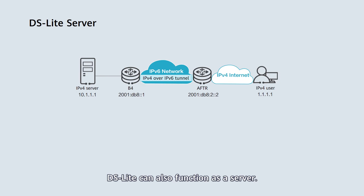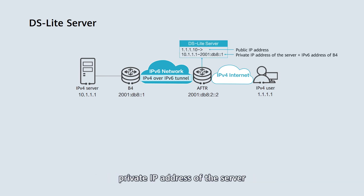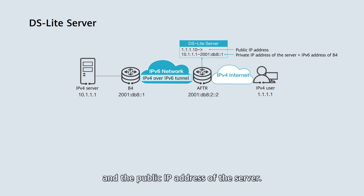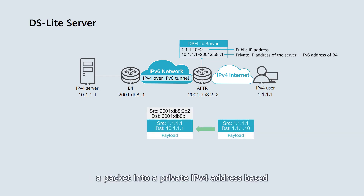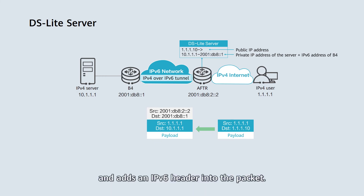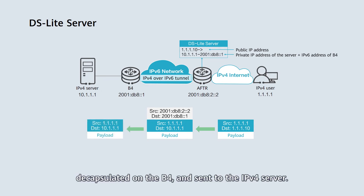DS-Lite can also function for server access. You can configure the mapping between the private IP address of the server plus the IPv6 address of B4, and the public IP address of the server. The AFTR translates the public IPv4 address of a packet into a private IPv4 address based on the mapping and adds an IPv6 header to the packet. The packet is then forwarded over the IPv6 network, decapsulated on the B4, and sent to the IPv4 server.